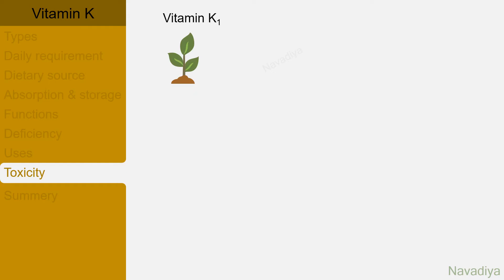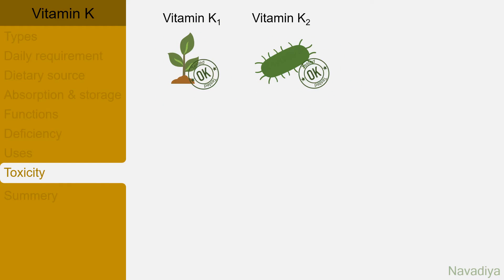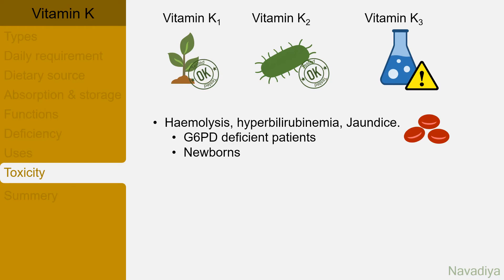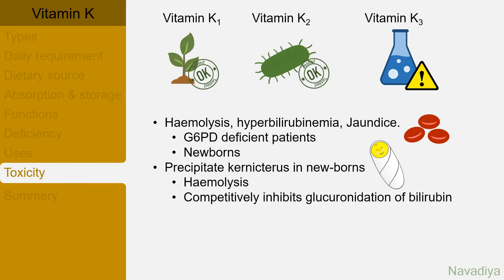Regarding toxicity: vitamin K1 and K2, which occur naturally, are considered safe. Toxicity occurs mostly with vitamin K3. It includes hemolysis, hyperbilirubinemia, and jaundice, especially in patients with G6PD deficiency and newborns. It can precipitate kernicterus in newborns as it causes hemolysis and competitively inhibits glucuronidation of bilirubin. Because of this toxicity profile, vitamin K3 should not be used.